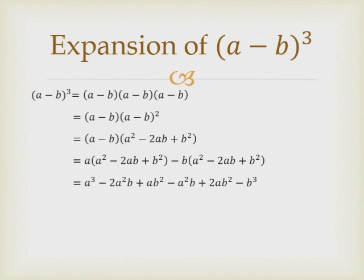Multiplying each term: a into a squared gives a cubed; a into minus 2ab gives minus 2a squared b; a into b squared gives ab squared. Then for minus b: minus b into a squared gives minus a squared b (written in alphabetical order); minus b into minus 2ab gives plus 2ab squared; and minus b into plus b squared gives minus b cubed.